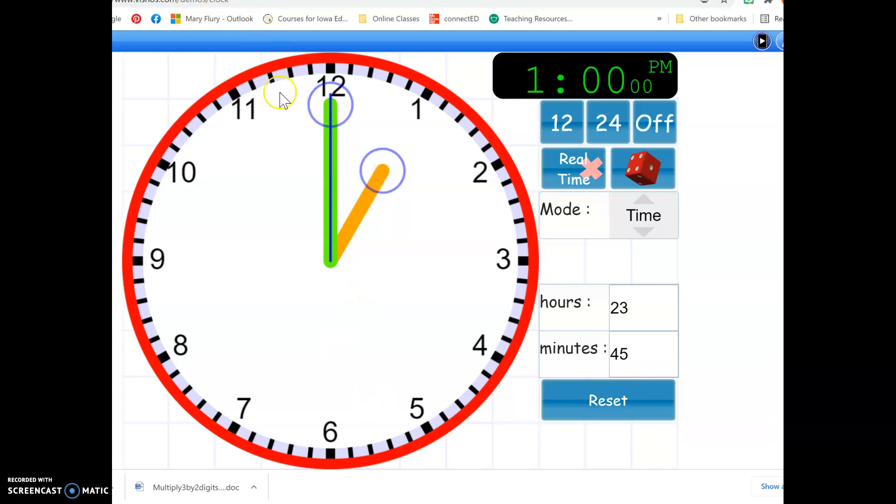I can count back 15 tick marks: 1, 2, 3, 4, 5, 6, 7, 8, 9, 10, 11, 12, 13, 14, 15. Remember, each tick mark is a minute. So 15 minutes earlier than one is 12:45, and this is what it should look like on your clock.